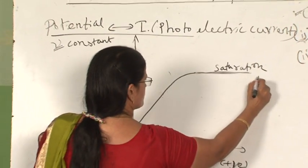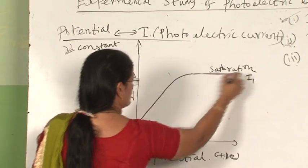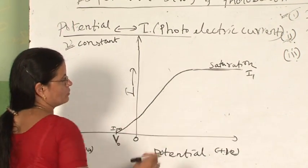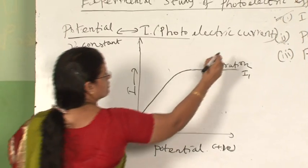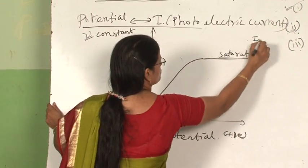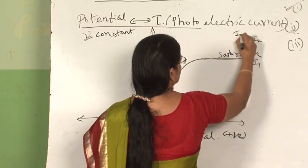Now suppose this experiment is done with intensity I1. If you repeat the same experiment with another intensity I2, with I2 greater than I1, a similar type of graph is observed.